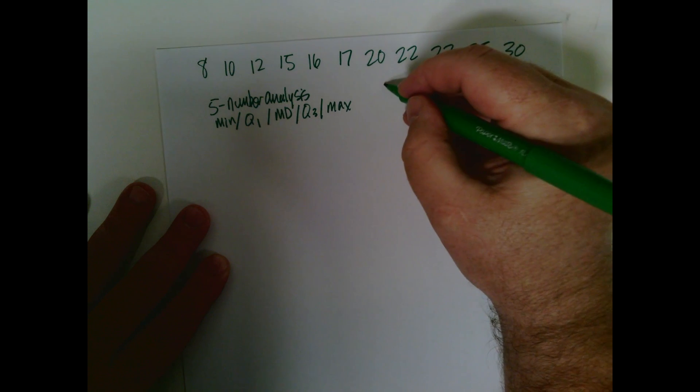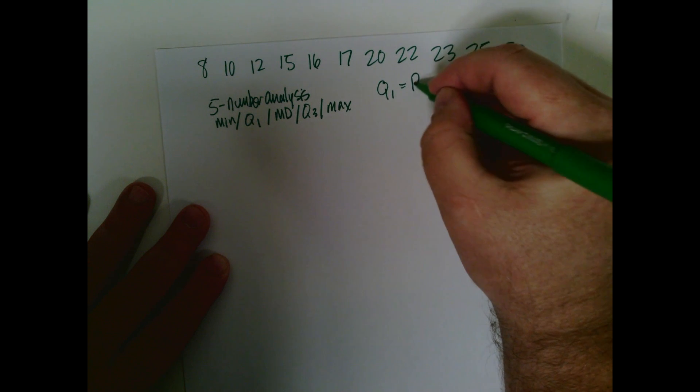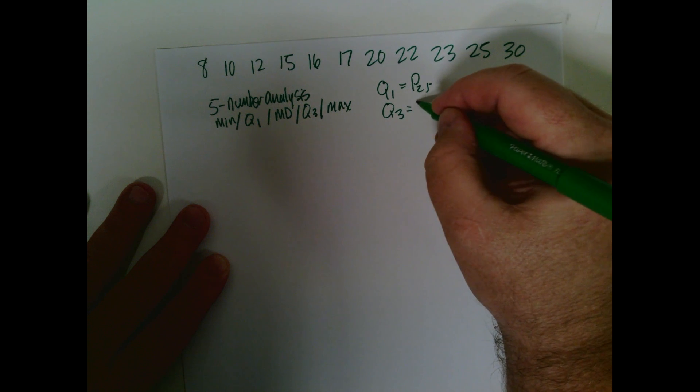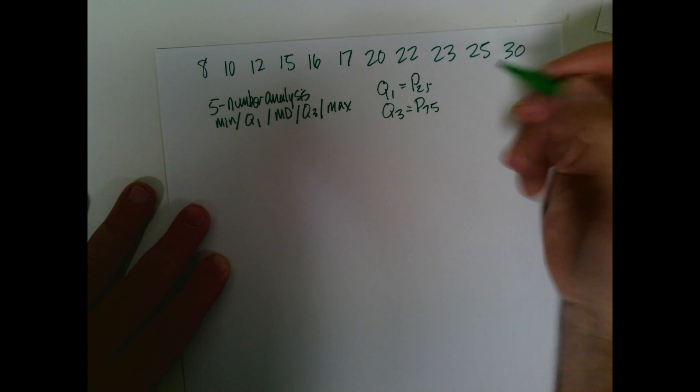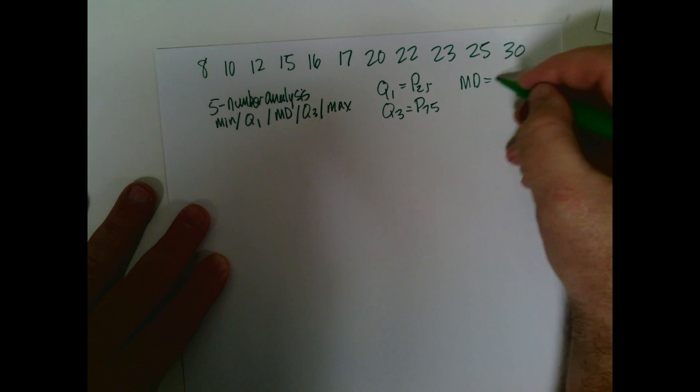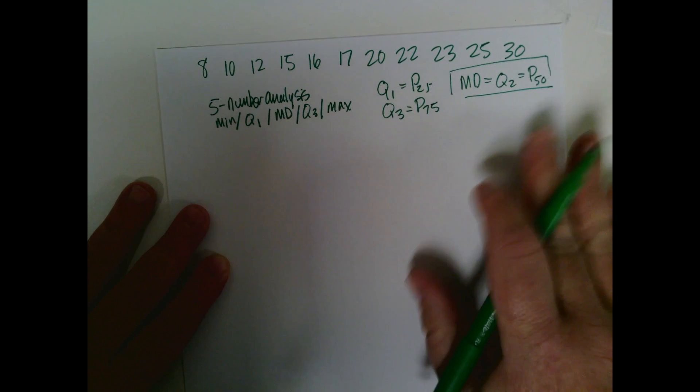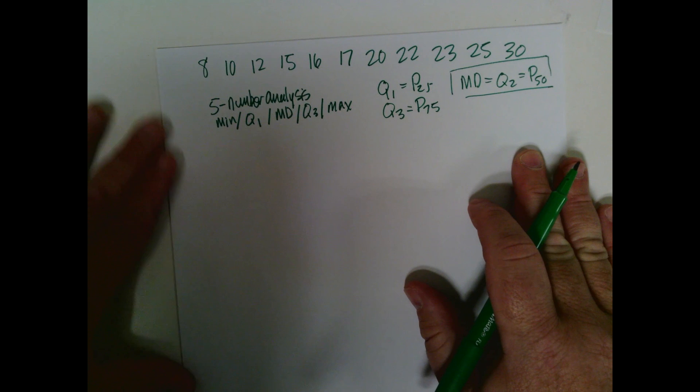And if you recall, the first quartile is the 25th percentile, and the third quartile is the 75th percentile. And also, of course, the median, that's the second quartile, but it's also the 50th percentile. So they're all connected. So really, we've done the median before. So let's do that for each one of these.